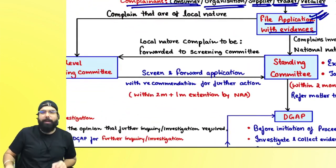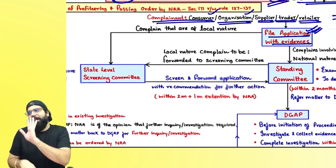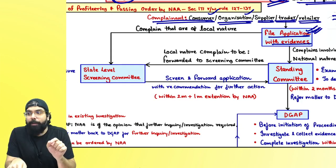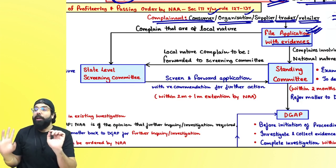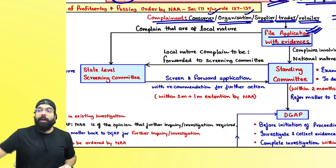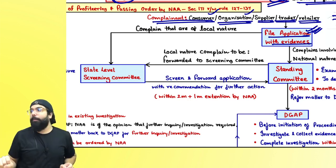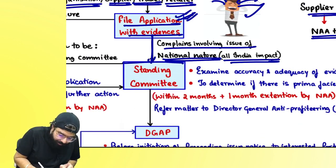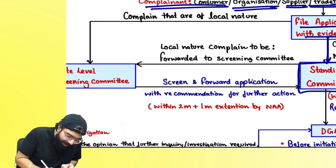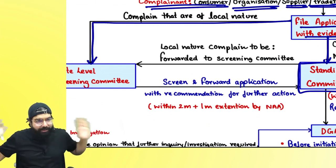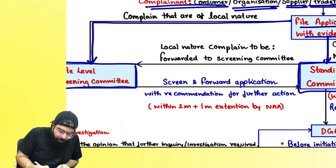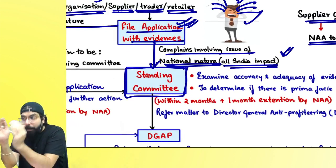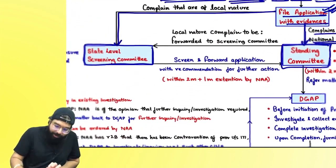There is a standing committee and a state-level screening committee. If your problem is a state or local problem, you first go to the state-level screening committee. If your problem is of national nature — for example, McDonald's across India — that's a national impact problem. In that scenario, if the complaint involves an issue of national or all-India impact, go directly to the standing committee. If it's a complaint of local nature, go to the state-level screening committee.